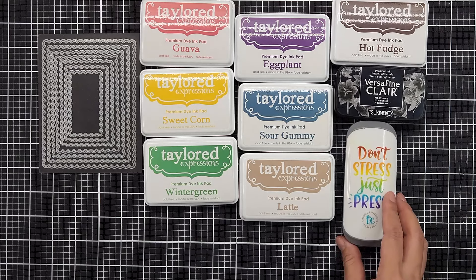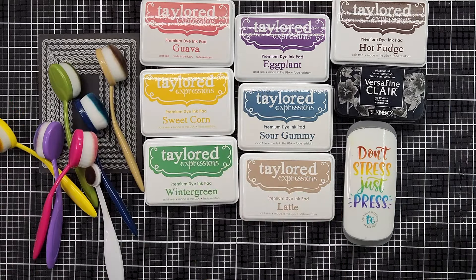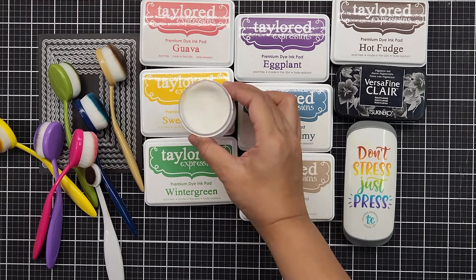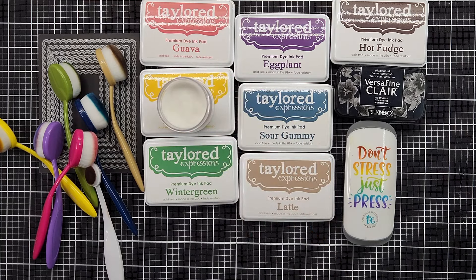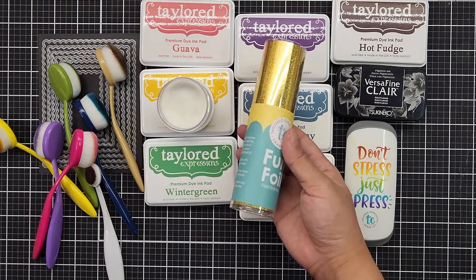My Press It tool, blending brushes, clear embossing powder and Fun Foil in the color Gold Shimmer. And for cardstock I am using Sugar Cube and Black Licorice.